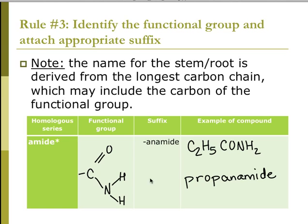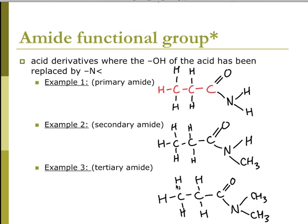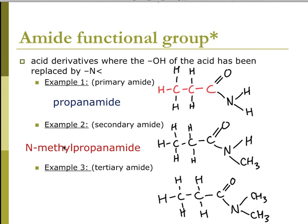Moving on, here's the amide group — a double-bonded O on the carbon that is bonded to the N. It is propanamide. You can do the same thing with amide groups: primary amide, secondary amide, tertiary amide. No replacements on the hydrogen gives propanamide. One replacement gives N-methylpropanamide, and two replacements gives N,N-dimethylpropanamide. You would name these groups depending on what they are.